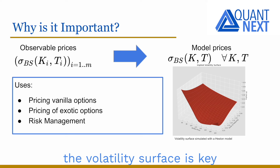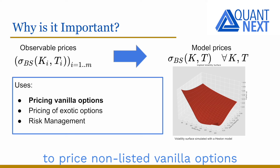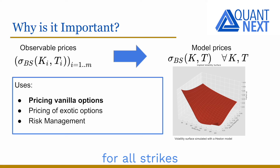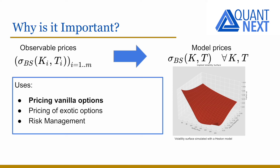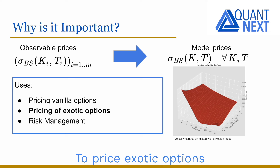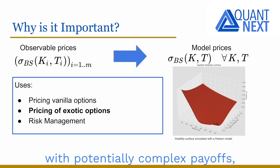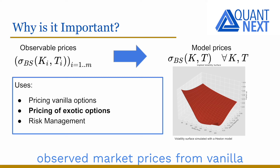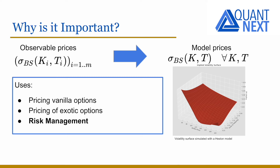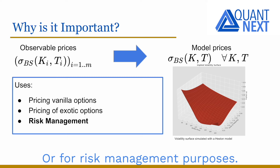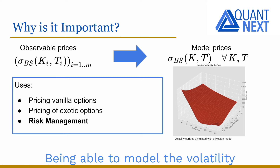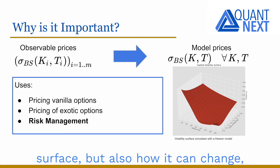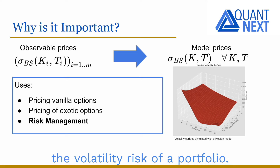The modeling of the volatility surface is key to price non-listed vanilla options for all strikes beyond the listed ones, which can typically be very out of the money, and to price vanilla options for all maturities as well. It is also used to price exotic options with potentially complex payoffs, the model being calibrated to fit observed market prices from vanilla options as closely as possible, or for risk management purposes. Being able to model the volatility surface but also how it can change is key to manage the volatility risk of a portfolio.